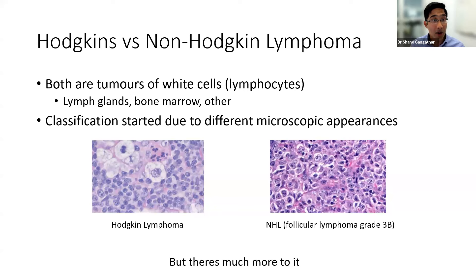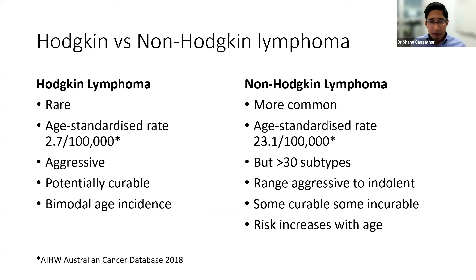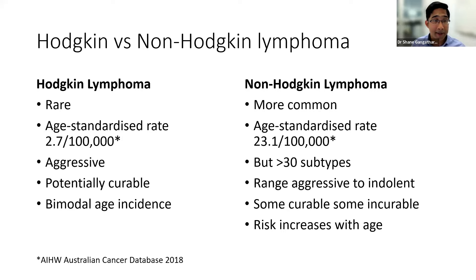There's much more to the differences than pathology. Hodgkin lymphoma is quite rare — only about 2.7 in 100,000 people based on Australian data from 2018. We consider it an aggressive lymphoma that grows rapidly over weeks to months, something we want to treat right away. Importantly, if we treat it, it is potentially curable. It has a very interesting bimodal age incidence — both young people and older patients are affected.